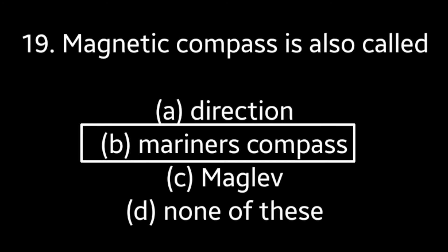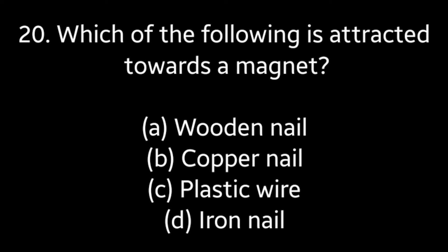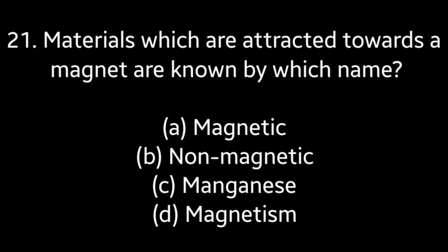Question number twenty: which of the following is attracted towards a magnet — wooden nail, copper nail, plastic wire, or iron nail? Answer is option D: iron nail. Question number twenty-one: materials which are attracted towards a magnet are known by which name — magnetic, non-magnetic, manganese, or magnetism? Answer is option A: magnetic.